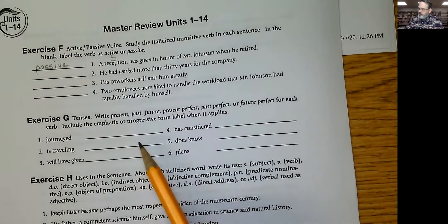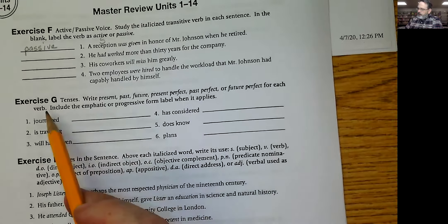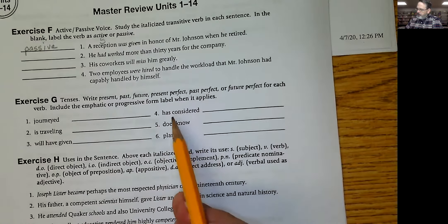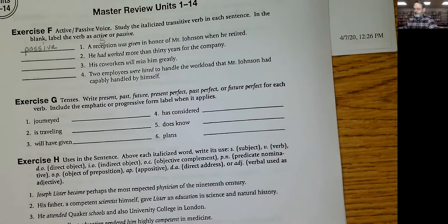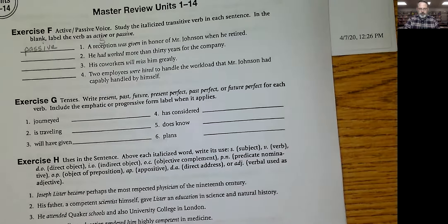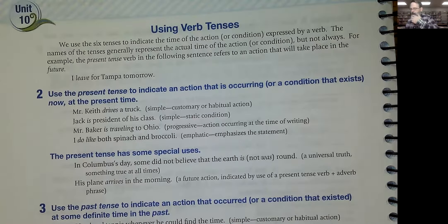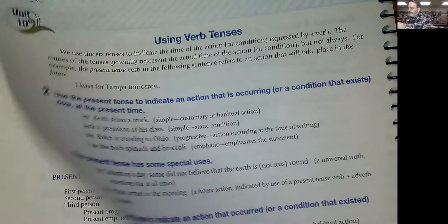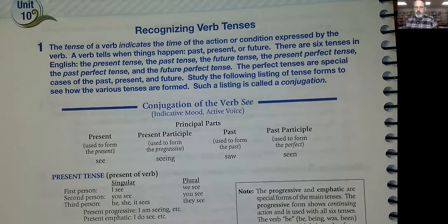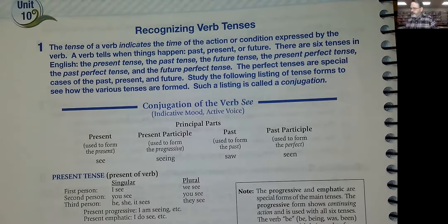Okay, so you do the rest of those four. Now we're talking about verb tense — present, past, future, present perfect, past perfect, or future perfect for each verb. Include the emphatic or progressive form label when it applies. I went ahead and looked up the definition of all the tenses — it begins on page 92 — so that we can remember all of this before we get too deep into the exercise.